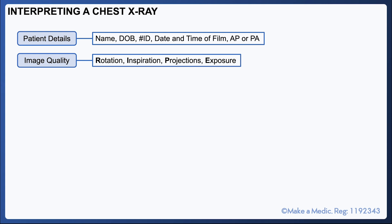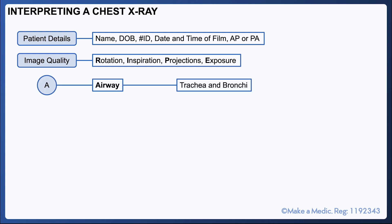The structure for interpreting a chest x-ray can be broken down into its own A to E approach. Firstly, you look at the airways, meaning the trachea and the bronchi. You're primarily looking for any deviation in the position of the trachea. If it is not in the midline, you should start thinking about the various forces that may be pushing or pulling it out of position.